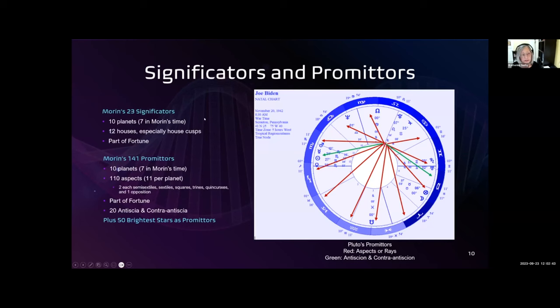Moran used 23 significators, 10 planets, 12 houses, especially on the cusps, like Mars is here, and the part of fortune. He used 141 promitors and 50 stars.